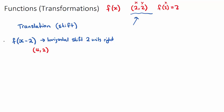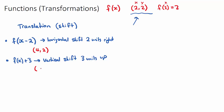A vertical shift would be f(x) + 3. Notice that the number added or subtracted is now outside of the bracket, and this means we're shifting the y value, because f(x) is the same as y. So we're adding 3 to the y value — this is a vertical shift of 3 units up, or 3 units in the positive y direction. Our original point (2, 2) becomes (2, 5), because 2 plus 3 equals 5.